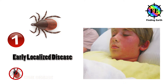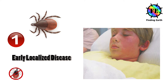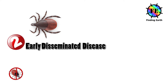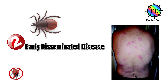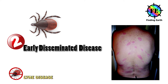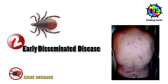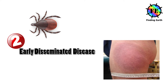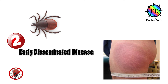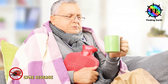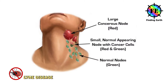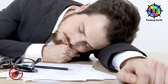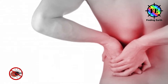This rash will disappear after 4 weeks. Stage 2: Early Disseminated Lyme Disease occurs several weeks after the tick bite, as bacteria begin spreading throughout the body. This stage is characterized by flu-like symptoms such as chills, fever, enlarged lymph nodes, sore throat, vision changes, fatigue, muscle aches, and headaches.